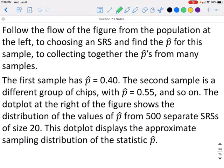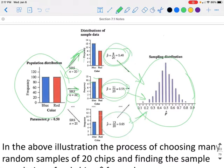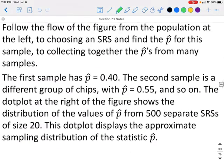Follow the flow of the figure from the population on the left to choosing a simple random sample, find the p̂, and then collect all of those together. We started with the whole population, found the different samples. In each sample we found the p̂, and then we would graph those all together.